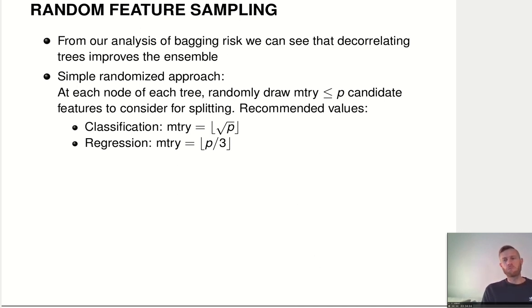For regression, they say use a third. But these are rules of thumb, not necessarily the best values for your specific application. We decorrelate the individual members of our ensembles by forcing them to only use a subset of available features for every split, randomly drawing another subset for each split.